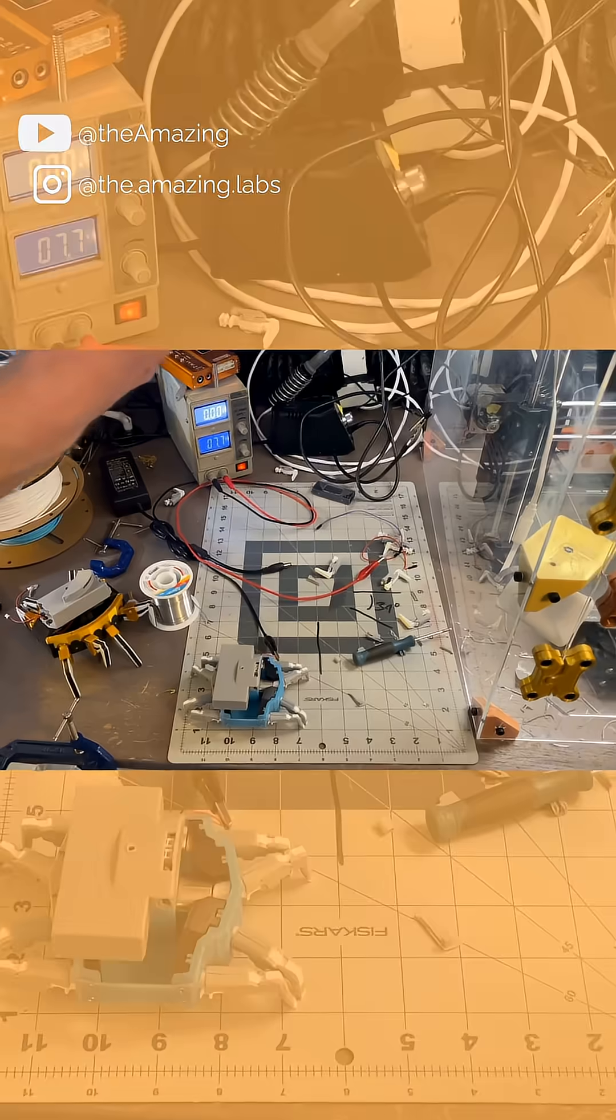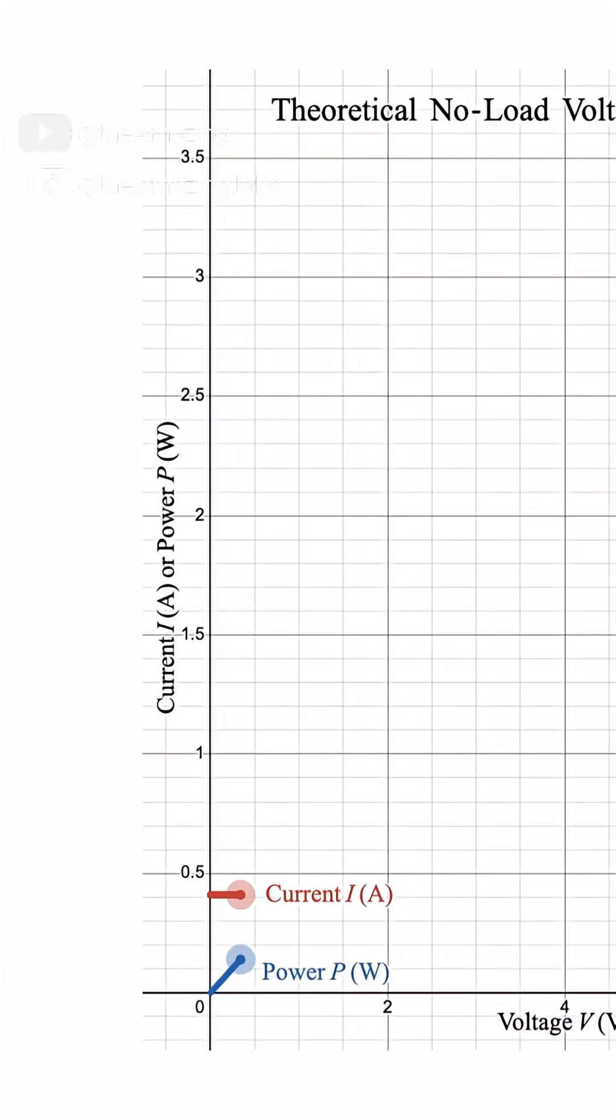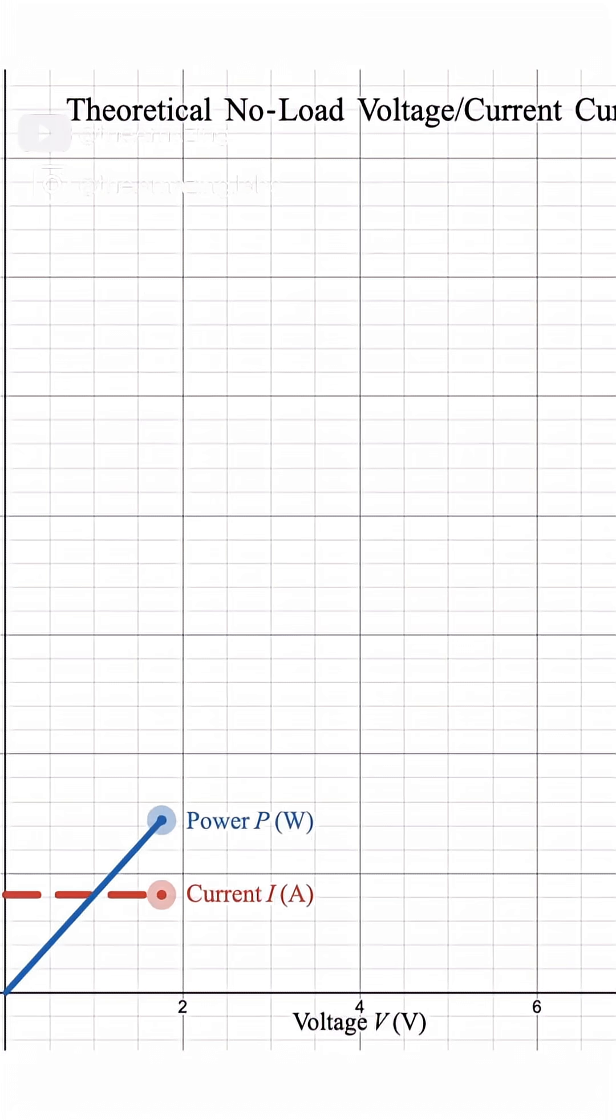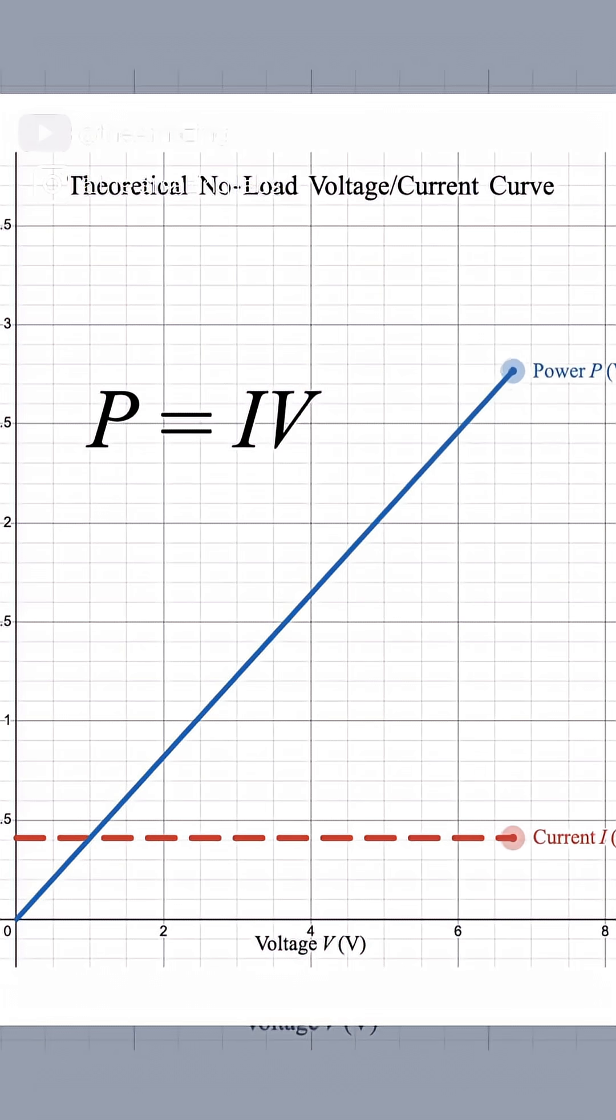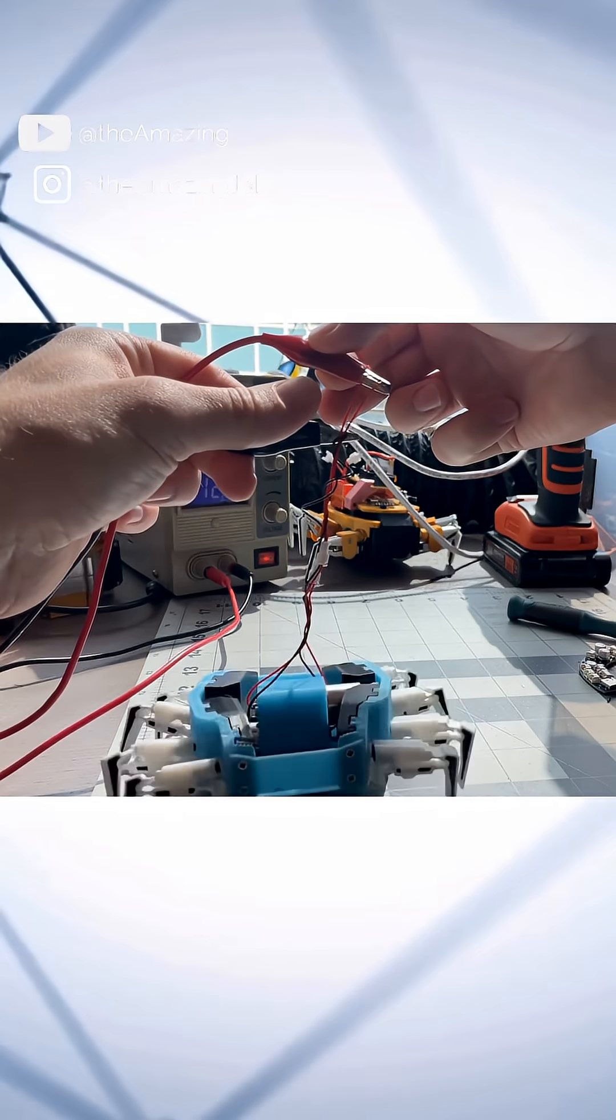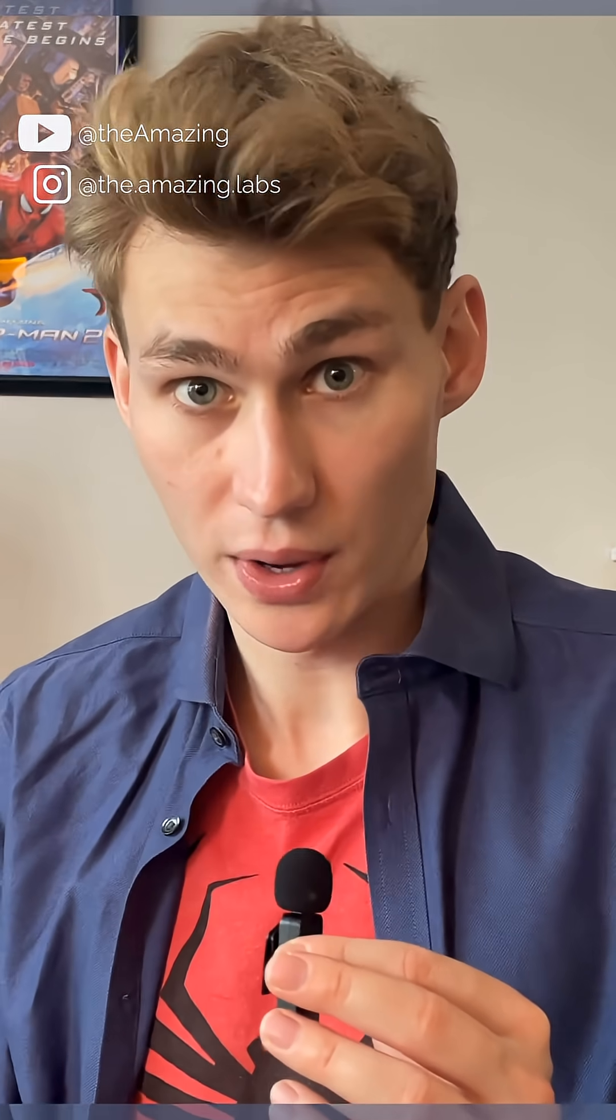No matter how much voltage I put across the unloaded robot's motors, the current shouldn't change. So the extra power that I get, which is voltage times current, the current doesn't change. It's just the voltage changing and that translates to a faster gate cycle. That's where that power is going.